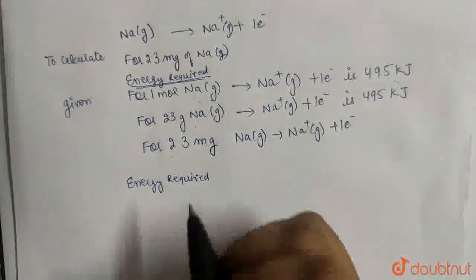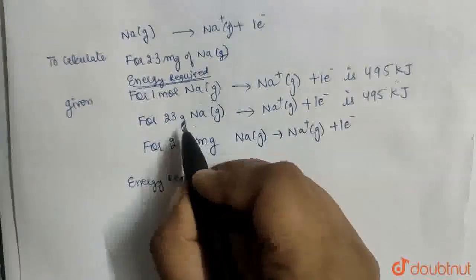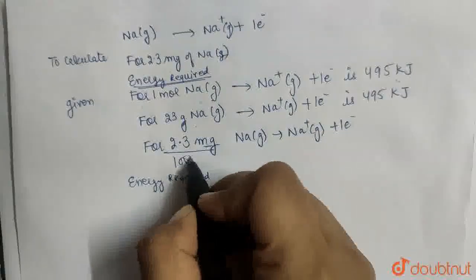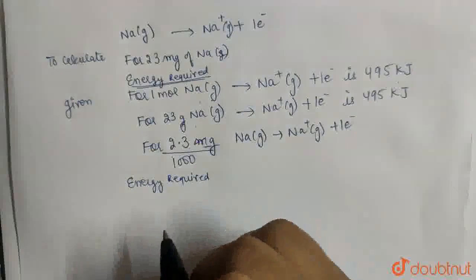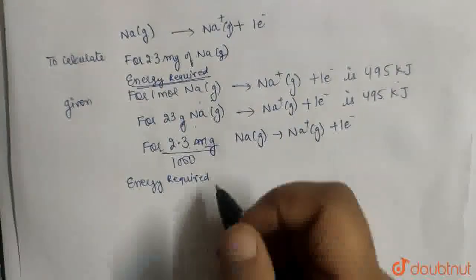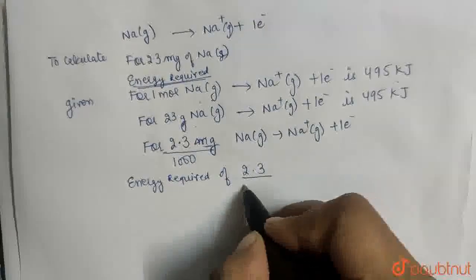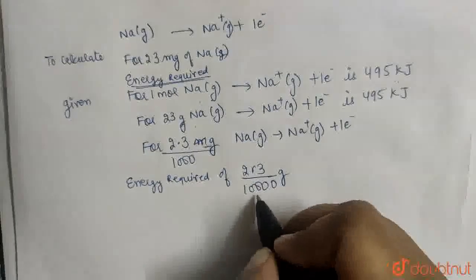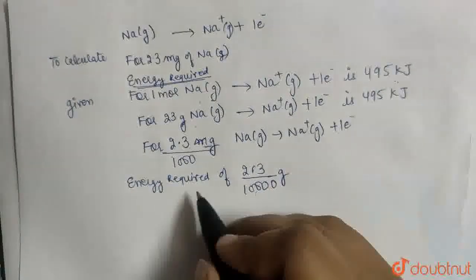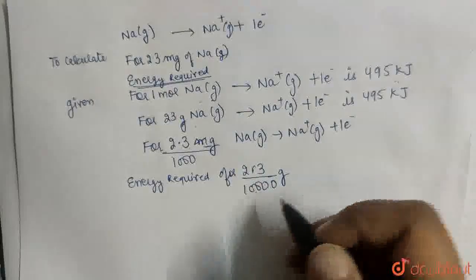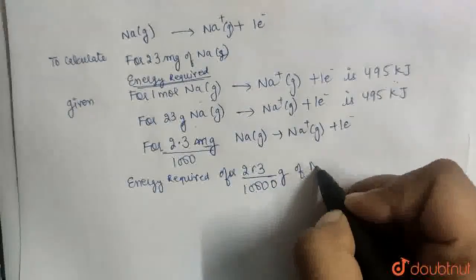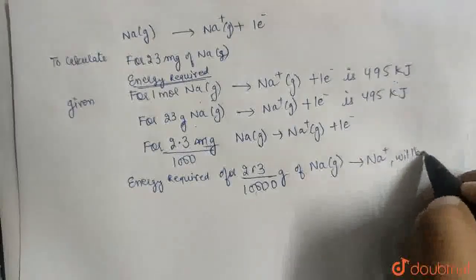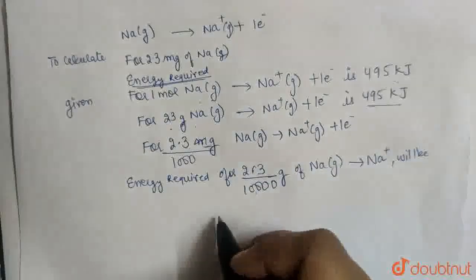For 2.3 mg by 1000 g, so energy required for 2.3 by 1000 g, or in decimal 0.0023 g. Okay, so it becomes 23 divided by 10,000 g. Energy required for 23 by 10,000 g of Na vapors to convert to Na positive will be: